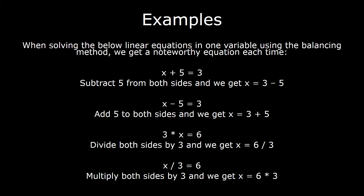Our objective is to isolate the variable. On the LHS we have x plus 5; we need to get rid of the plus 5. So we subtract 5 from both sides. The LHS becomes x plus 5 minus 5, which is just x, and the RHS becomes 3 minus 5.